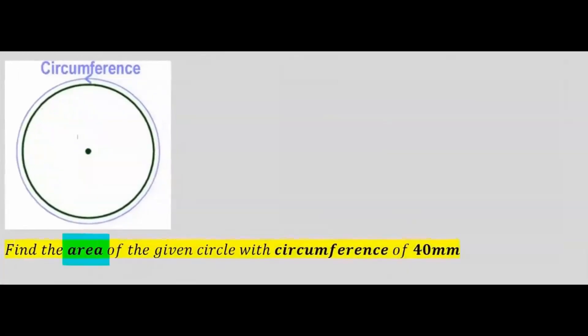Let's find the area of the given circle with a circumference of 40 millimeters. We have no given radius and no given diameter, but the perimeter, which is the same thing as the circumference.